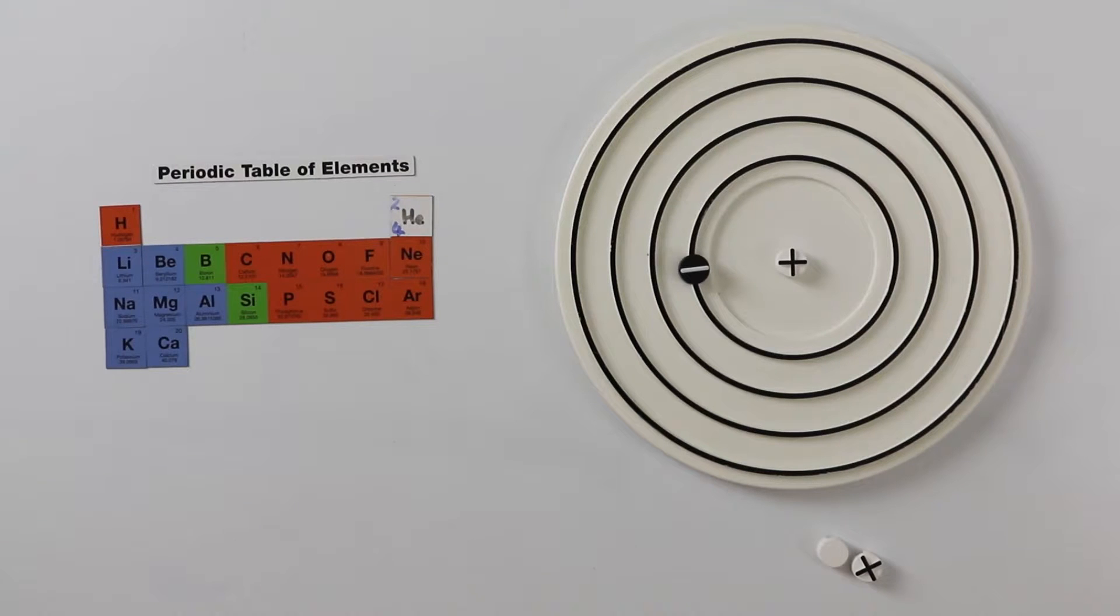The next atom up is helium. Its nucleus is more complex. It has two protons, and these are held together by two neutrons. These are blank to represent the fact that they have no charge. This makes the nucleus more stable.